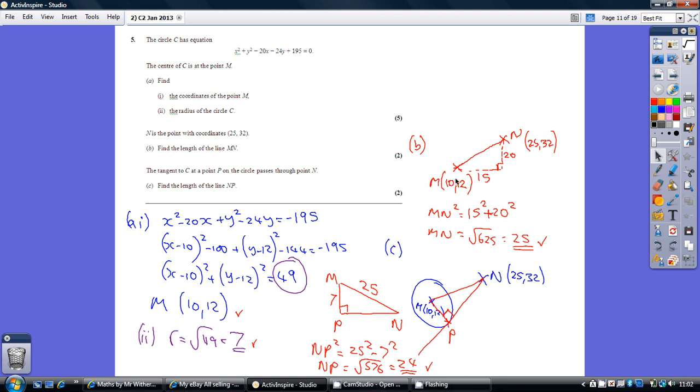Now, for part B, to find the length of MN, just do a quick sketch. We know the coordinates for M, we know the coordinates for N, so just using Pythagoras, we can see that this length must be 15, as the x-coordinate goes from 10 to 25. And this length here must be 20, as the y-coordinate goes from 12 to 32.